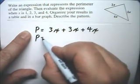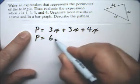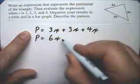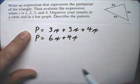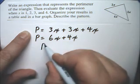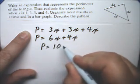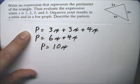So, just to show you little by little, 3x plus 3x is 6x, plus 4x. So, all together, we have p is equal to 10x.